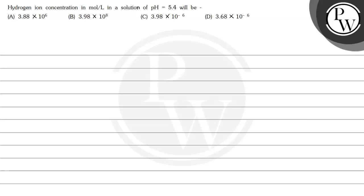Hello, let's see the question here. Hydrogen ion concentration in mole per liter in a solution of pH 5.4 will be: 3.88 multiplied by 10 to the power 6; 3.98 multiplied by 10 to the power 8; 3.98 multiplied by 10 to the power minus 6; or 3.68 multiplied by 10 to the power minus 6.